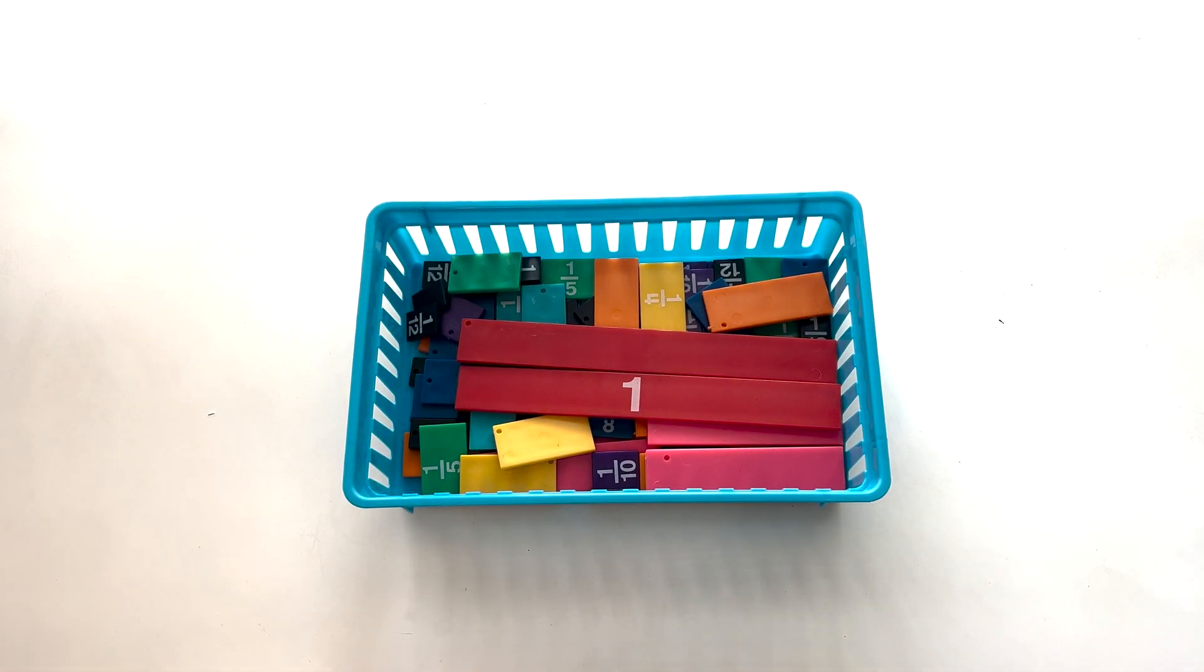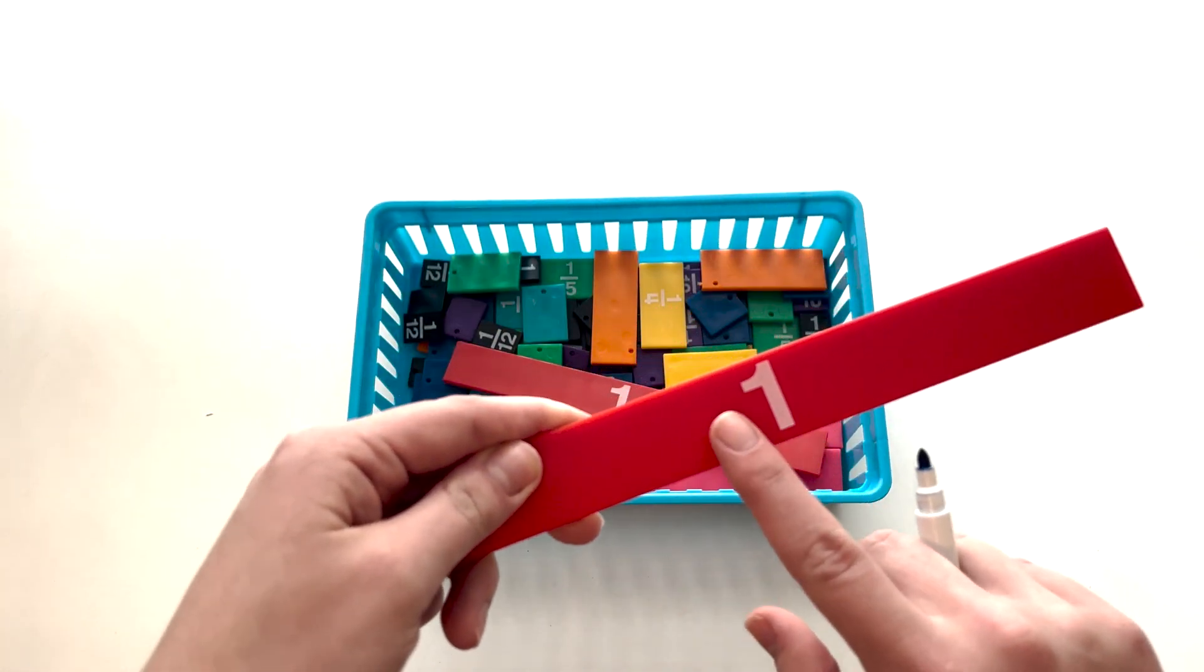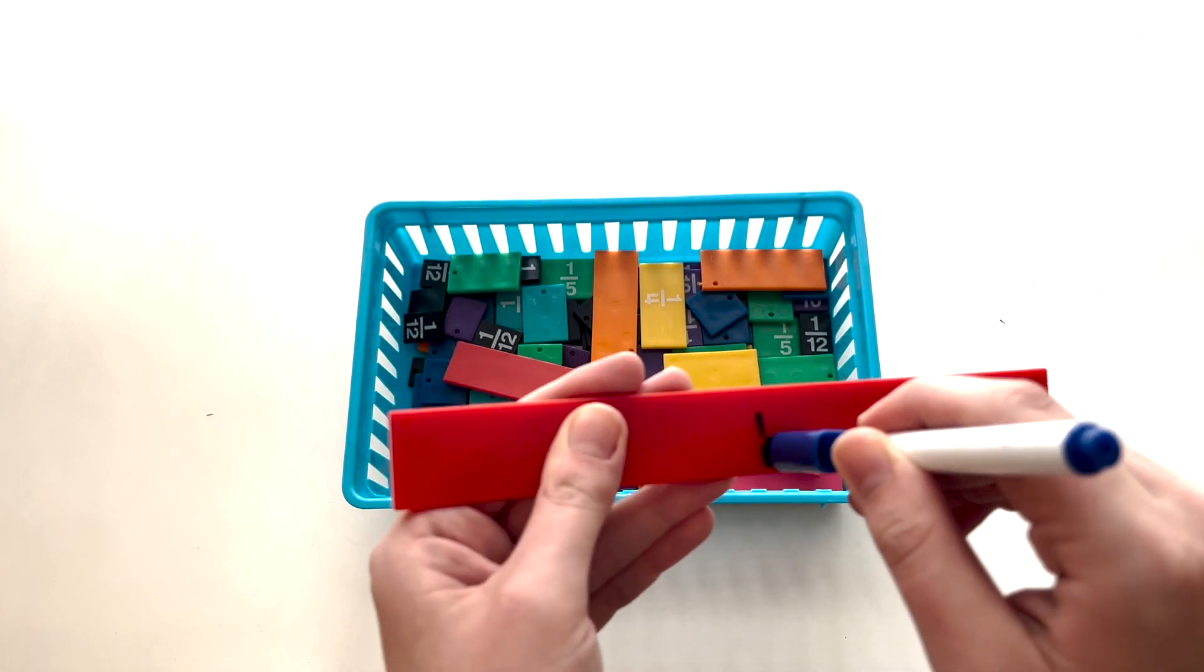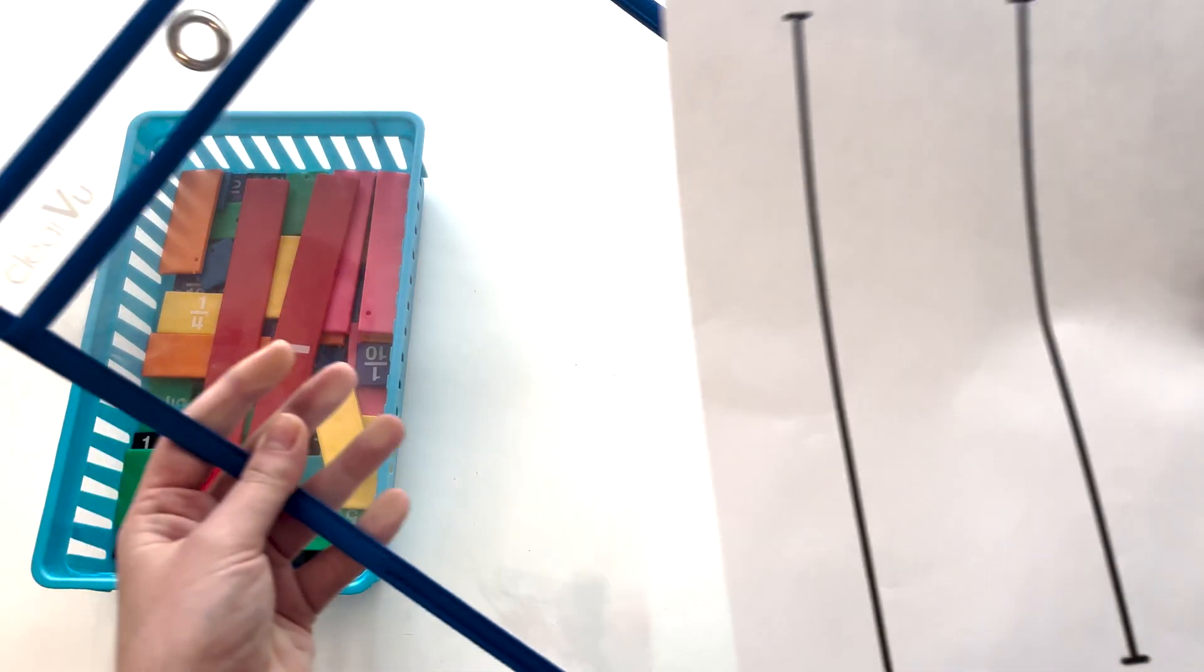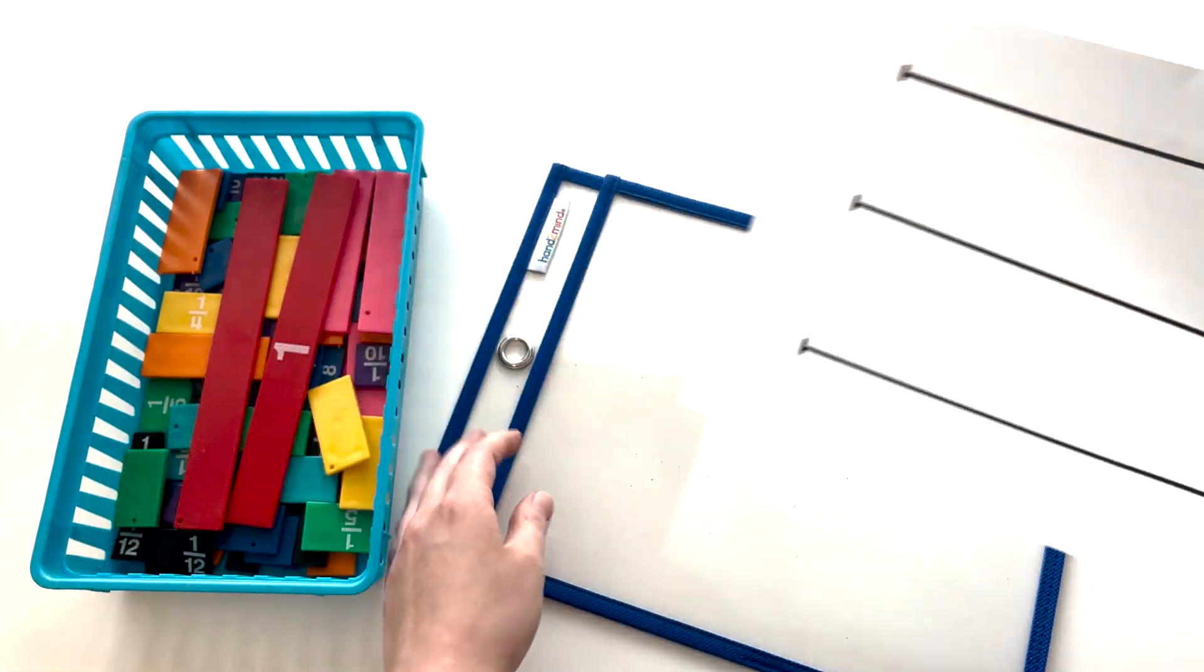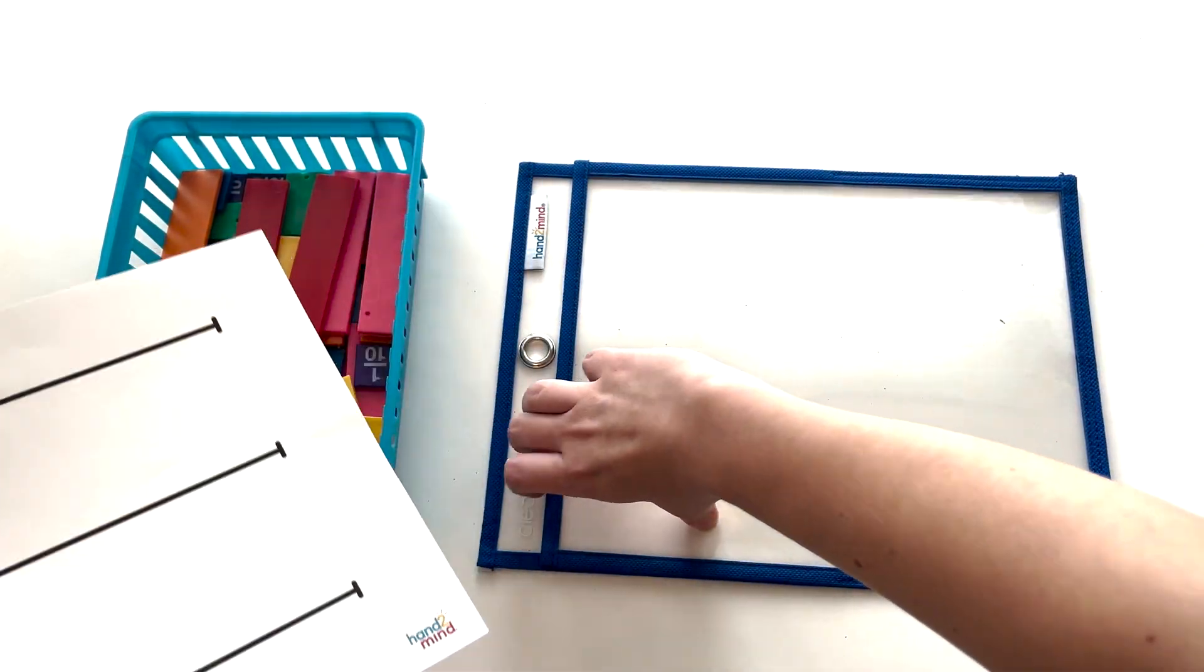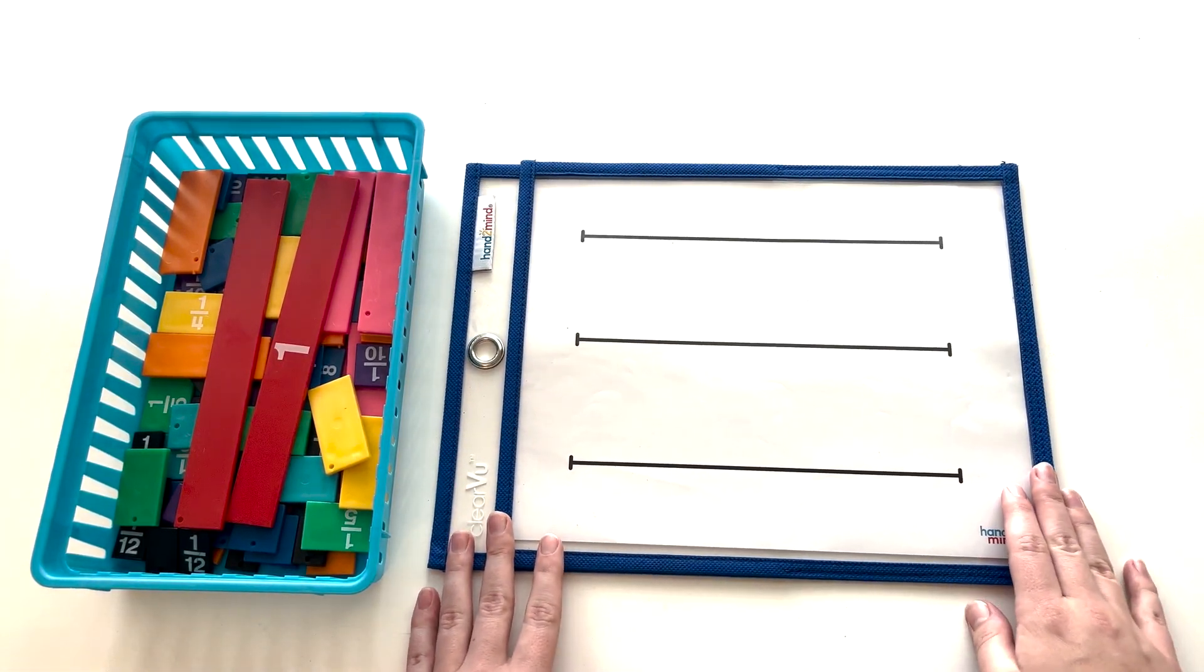Let's start by choosing one of the one whole pieces from our fraction tiles. You can see here that it is labeled on one side and blank on the other and the best part is the blank side is write-on wipe-off. Now let's try a fun activity that you can easily do in your own classroom. First we're going to place this printable inside one of the Clearview paper savers by Hand to Mind. This is great because it makes this activity reusable again and again for multiple students or groups of students in your class.